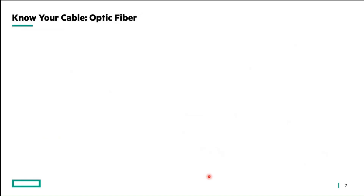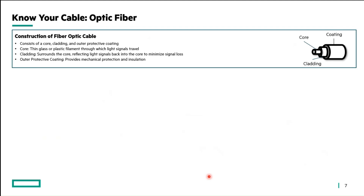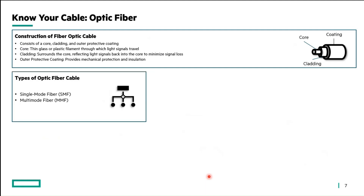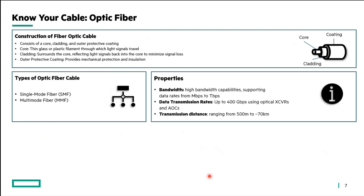Now it's time to understand fiber optic cable. The construction of fiber optic cable has a coating on the outside, inside which there is cladding, and inside that is the core — which is the actual fiber carrying your data from one point to another. There are two types of optic fiber broadly: single-mode fiber (SMF) and multi-mode fiber (MMF). The properties of optic cable include high bandwidth capabilities supporting data rates from lower megabits to terabits, and data transmission rates up to 400 gigabits per second when using optical transceivers.